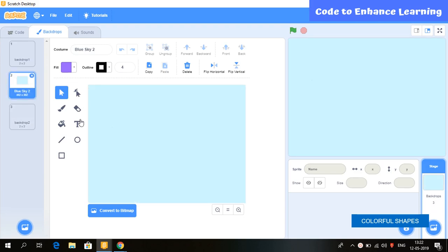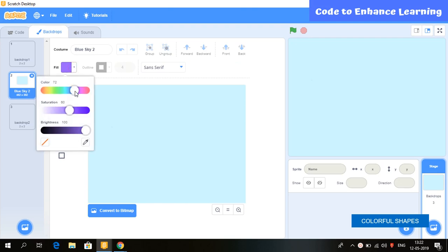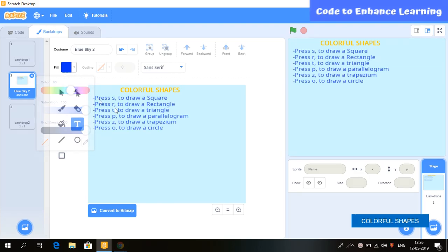We will select text icons so that we can write in the backdrop. We can change color also. Now, we will start writing whatever we want in the backdrop. These are the text which we want in the backdrop.